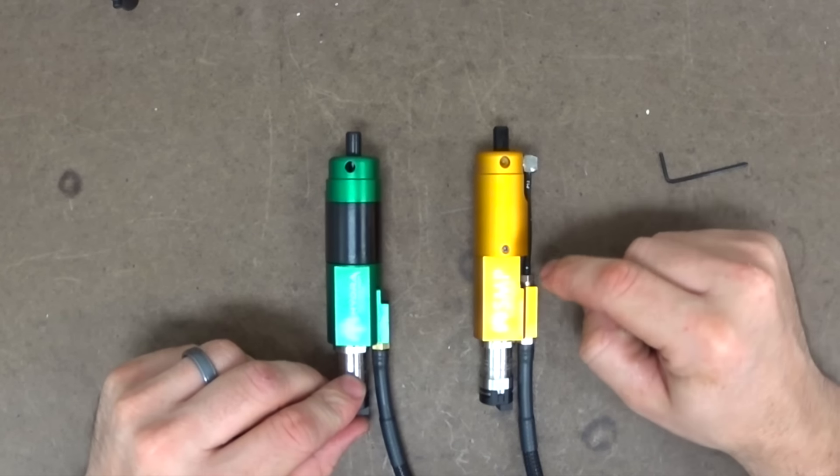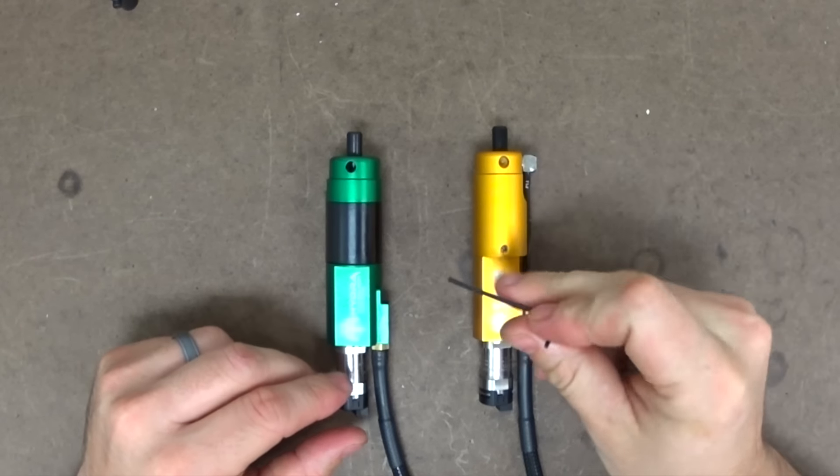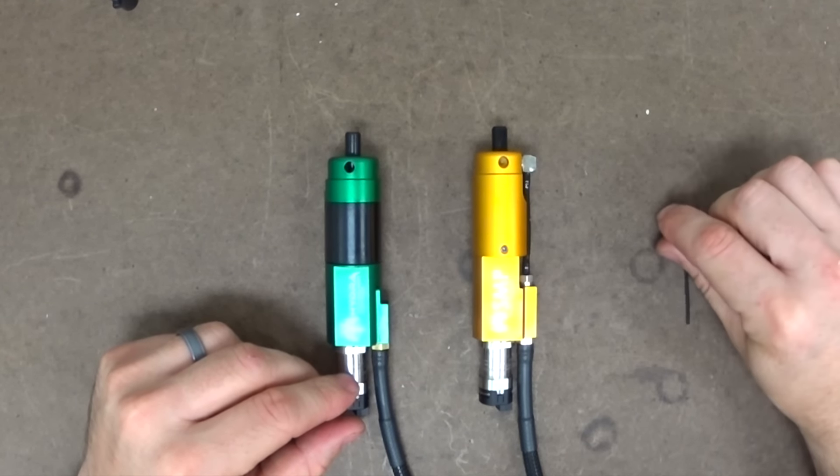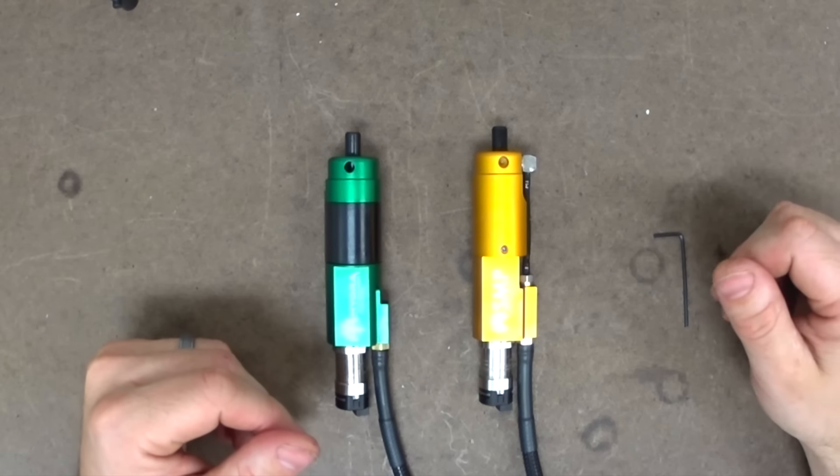The second thing you're going to notice is the lack of air line. There is still an air line in the Hydra, it's machined into the body itself. So they both still have the air line there, but it's implemented differently.